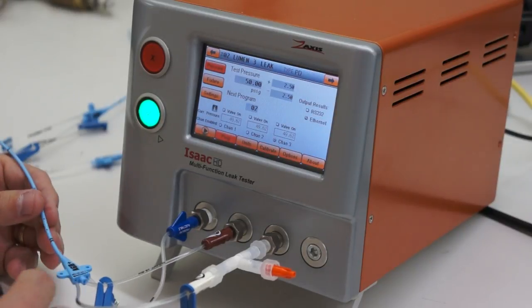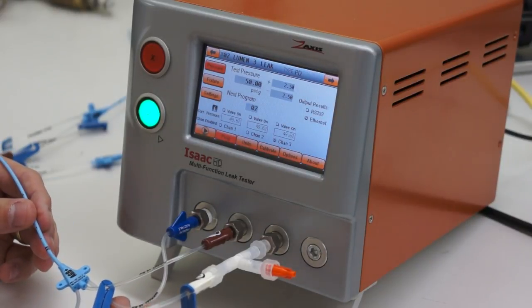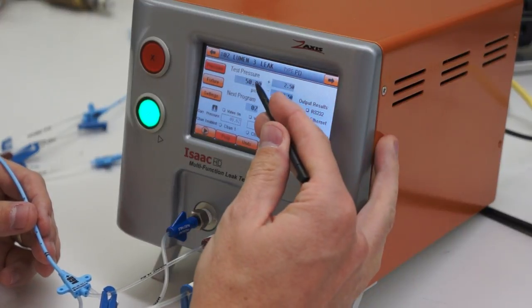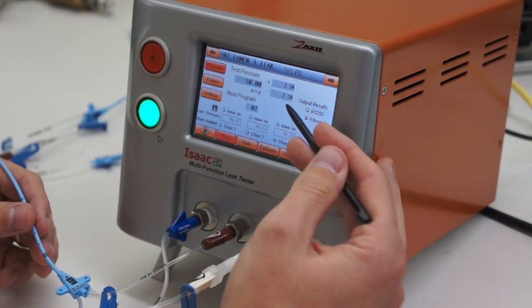We're doing a leak and flow test on a 3-lumen catheter. The leak test is done at 50 psi plus and minus 2.5 psi.